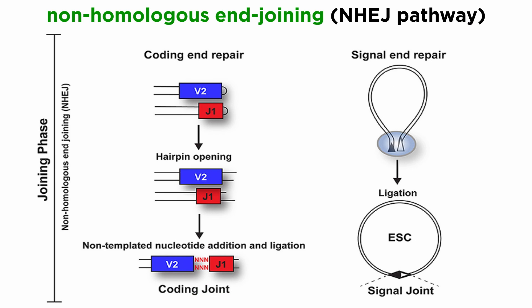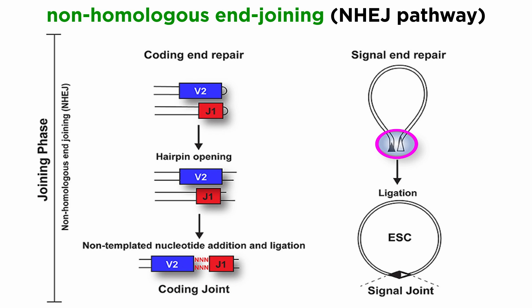In the joining phase, both the coding and signal ends are repaired by non-homologous end joining (NHEJ), the main pathway for repair of DNA double-strand breaks. The coding ends are often repaired imprecisely to increase diversity, as indicated by the red nucleotides shown. While the coding ends undergo extensive processing resulting in addition or deletion of bases to increase antigen receptor gene diversity, the RSSs at the signal ends are precisely joined in a head-to-head arrangement, generating a signal joint (SJ). Usually, VDJ recombination deletes the DNA between the gene segments to generate an excised signal circle (ECS) that is covalently sealed at the SJ, and the ECS is lost during cell division.